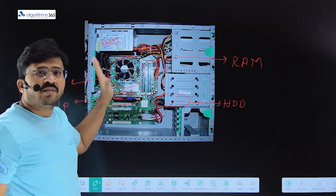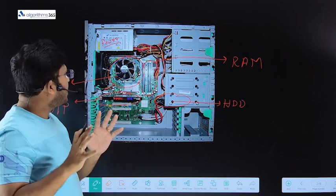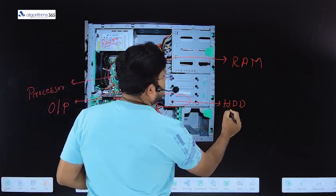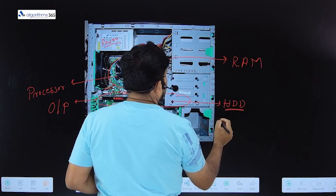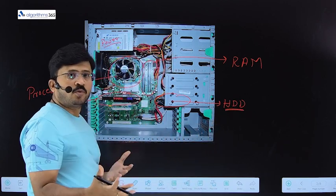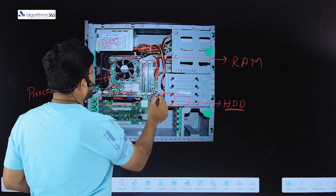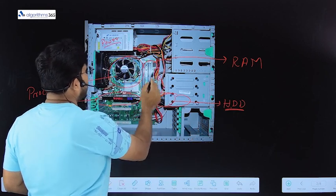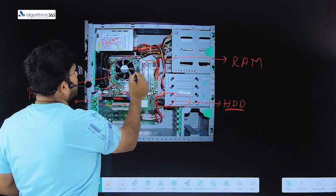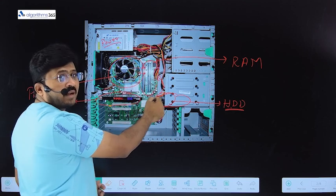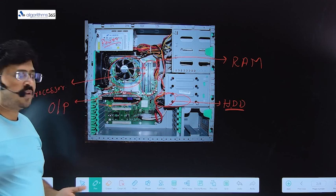Whatever is the programming that we are doing, that program get stored permanently here in the hard disk. And then when you run the program, that program get loaded from this part of the computer onto the RAM. And then the CPU reads those instructions from the RAM and runs the program.